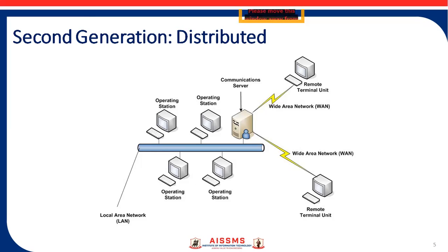Some of these distributed stations served as communications processors, communicating with field devices such as RTUs. Some served as operator interfaces providing the HMI for system operators. Still others served as calculation processors or database servers. The distribution of individual SCADA system functions across multiple systems provided more processing power for the system as a whole than would have been available in a single processor. The networks connecting these individual systems were generally based on LAN protocols and were not capable of reaching beyond the limits of the local environment.